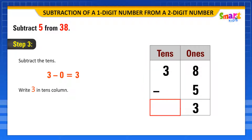Write 3 in the 10s column of the answer. Thus, 38 minus 5 is equal to 33.